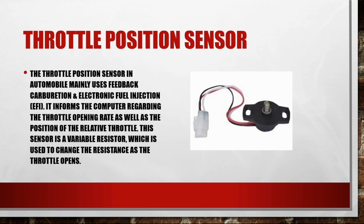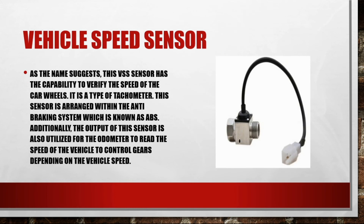The throttle position sensor in automobiles mainly uses feedback carburation and electronic fuel injection (EFI). It informs the computer regarding the throttle opening rate as well as the position of the relative throttle. This sensor is a variable resistor used to change the resistance as the throttle opens. It is not complex to identify a faulty throttle position sensor — a fall while speeding up is a major sign. Whenever you change this sensor, you cannot adjust it manually.